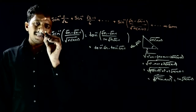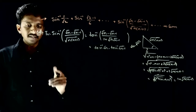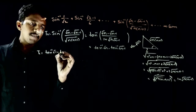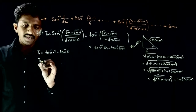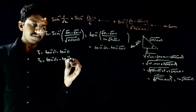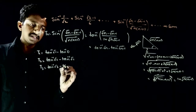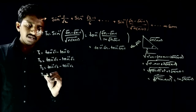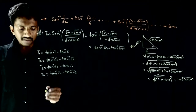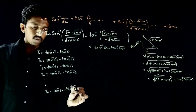So the nth term Tn = tan inverse(root n) minus tan inverse(root(n-1)). Writing out the summation: T1 = tan⁻¹(root 1) - tan⁻¹(0); T2 = tan⁻¹(root 2) - tan⁻¹(root 1); T3 = tan⁻¹(root 3) - tan⁻¹(root 2); T4 = tan⁻¹(root 4) - tan⁻¹(root 3). I hope you see the telescoping pattern continuing up to Tn.